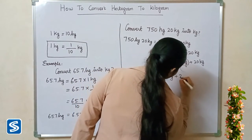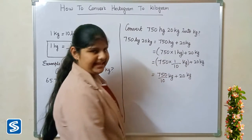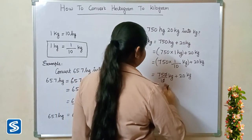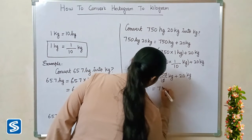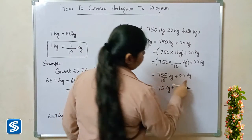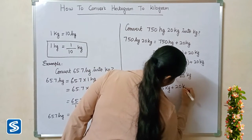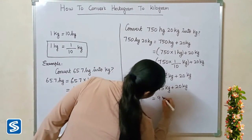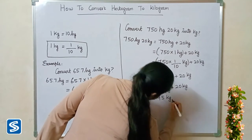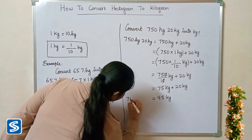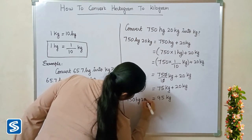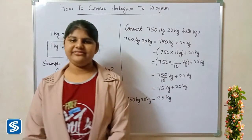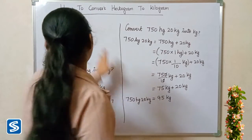The zero gets cancelled, so when we divide 750 by 10 our answer is 75 kilograms. 75 kilograms plus 20 kilograms equals 95 kilograms. So 750 hectograms 20 kilograms equals 95 kilograms. I hope you friends all understood how to convert hectogram into kilogram.